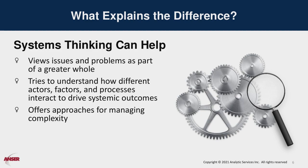Systems thinking is a discipline and a way of approaching questions that views issues and problems as part of a greater whole. It tries to understand how different actors, factors, and processes interact to drive systemic outcomes. It offers approaches for managing complexity, helping us see the underlying and often invisible structures that come together to create the outcomes we actually observe. Over the course of this presentation, I will address how and why Vietnam was able to contain COVID successfully during the first year of the pandemic, looking not just at outcomes, but also the underlying structures, systems, and mindsets that made them possible.